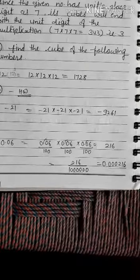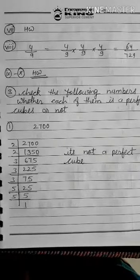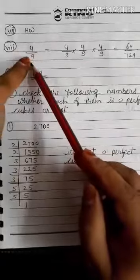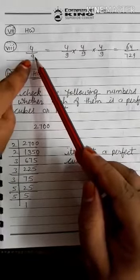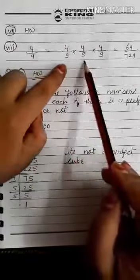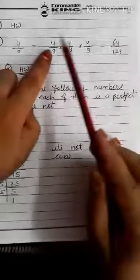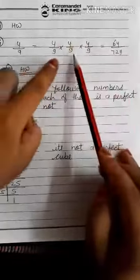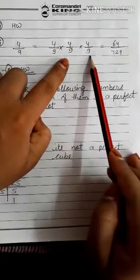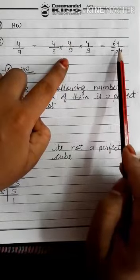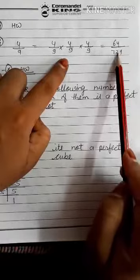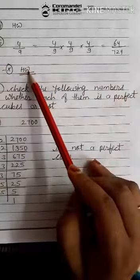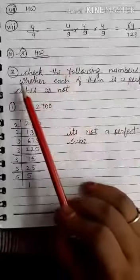Question number 7 is your homework. Question number 8 is a fraction: write it three times. Numerator: 4 × 4 × 4 = 64. Denominator: 9 × 9 × 9 = 729. So the answer is 64/729. Questions 9 and 10 are your homework.